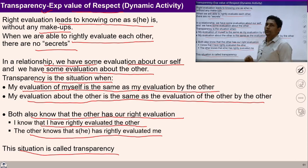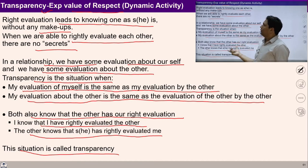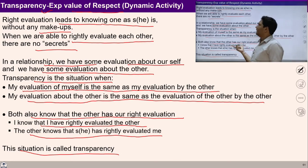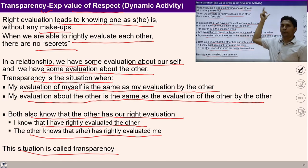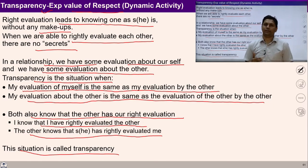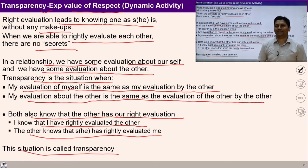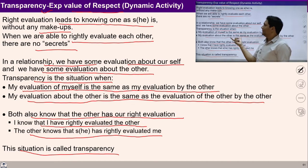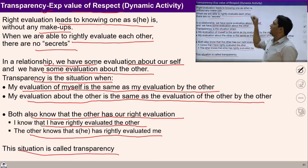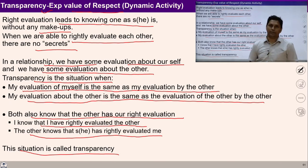Both people know that the other has the right evaluation — I know I have rightly evaluated the other, and the other knows they have rightly evaluated me. This situation is called transparency. Students, you can take a pause, stop this video and explore within yourself: are you able to ensure this transparency with anyone? If it is happening, it means you are able to ensure respect. If there is transparency, you have the established value of respect.